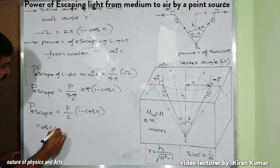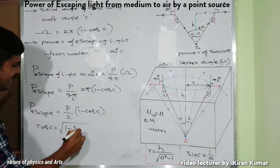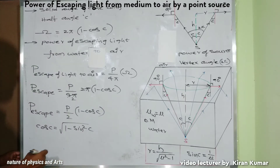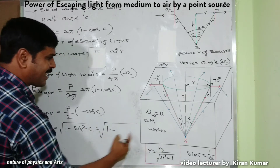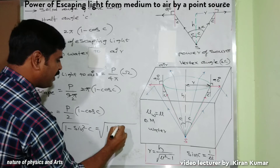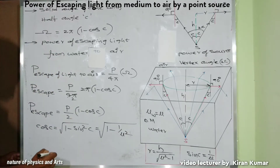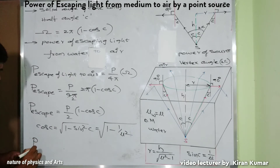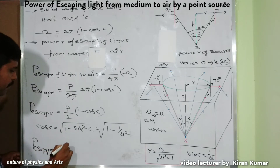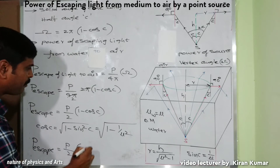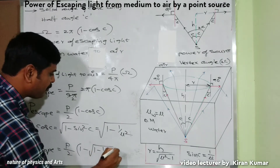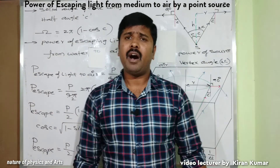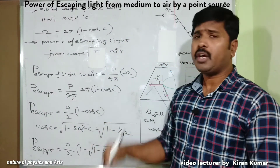Now, cos C = √(1 − sin²C). Since sin C = 1/μ, we have cos C = √(1 − 1/μ²). Substituting back: P_escape = P / [2 · (1 − √(1 − 1/μ²))]. This is the power of light escaping from water to air.